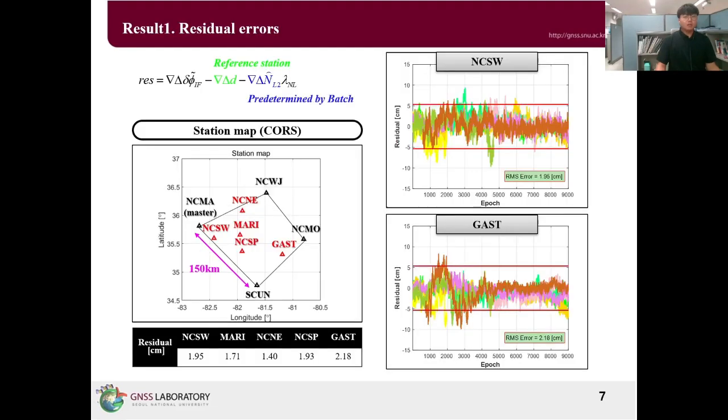As the first results, the residual error of the ionosphere-free combination measurement was analyzed. The application of the proposed method confirmed that the residual errors were at the centimeter level, and this is sufficient for the success of the ambiguity resolution and centimeter level precise positioning.